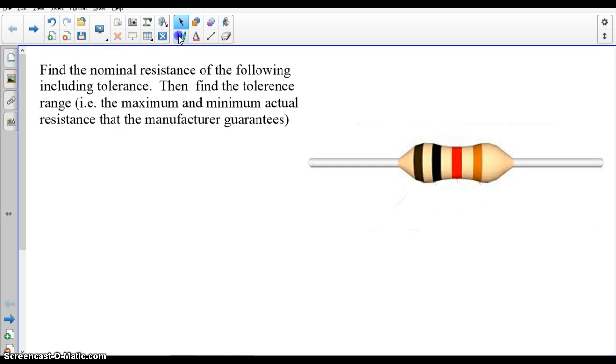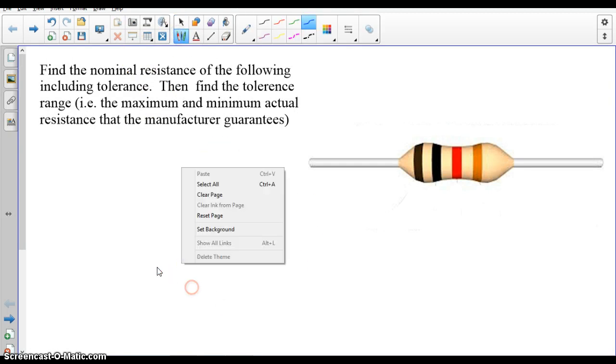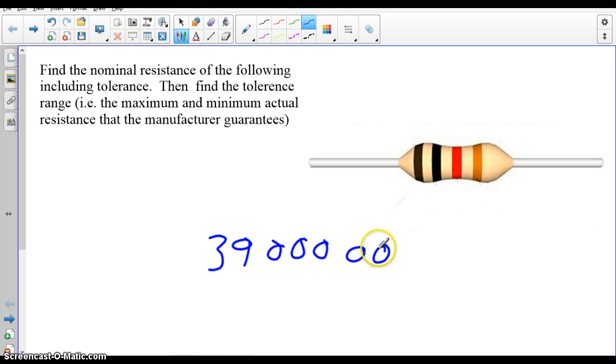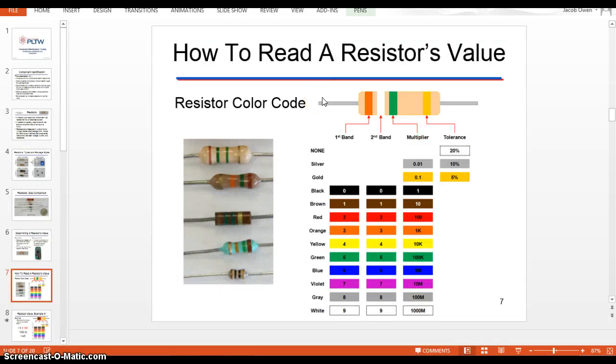The orange means three, the white means nine, and the green means five zeros. So it's three, nine, and five zeros. Each color just represents a number, and the first stripe is the first digit, second stripe second digit, third stripe how many zeros come afterwards.